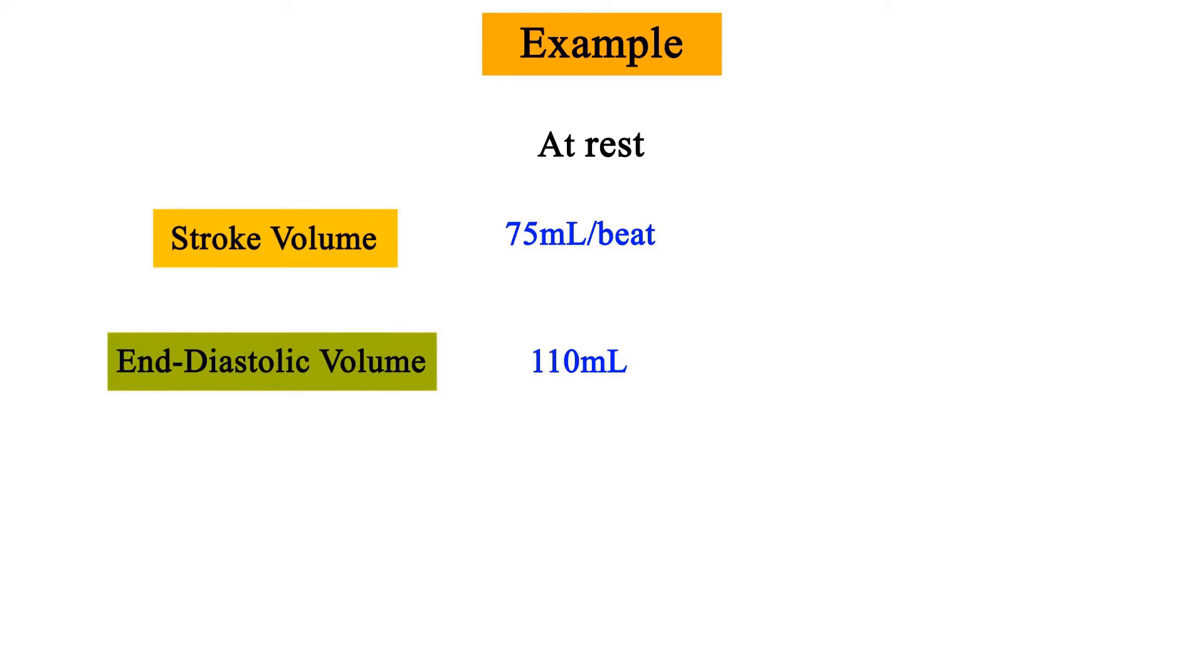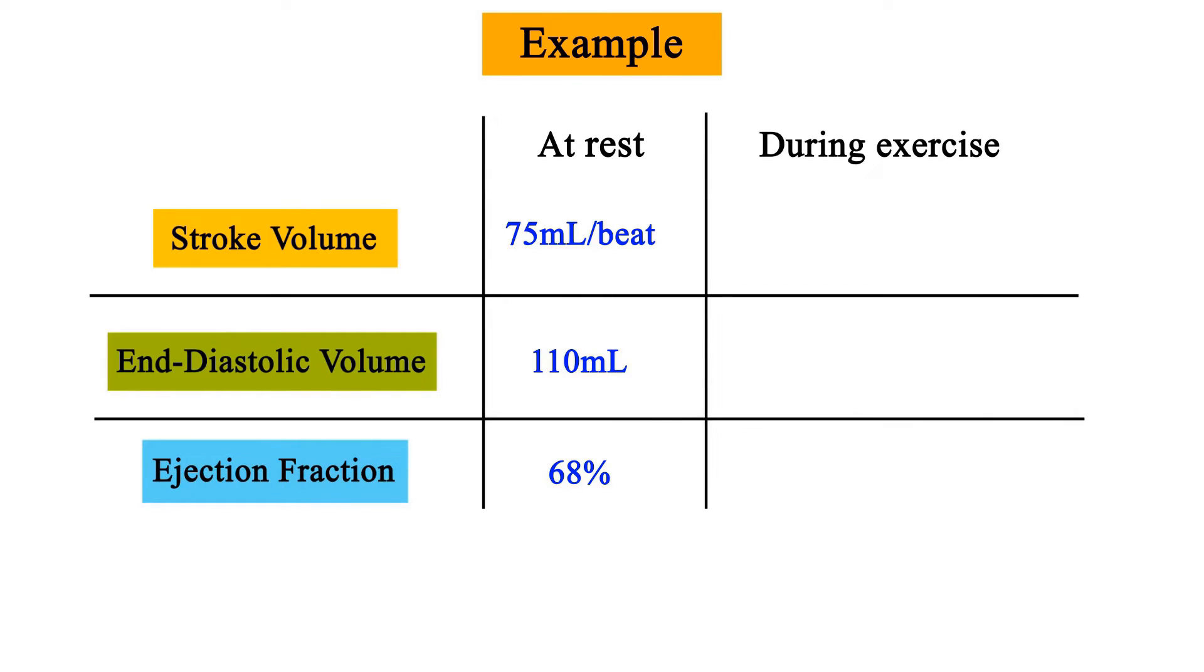For example, a person at rest has a stroke volume of 75 milliliters per beat and an end diastolic volume of 110 milliliters. This results in an ejection fraction of 68%. However, during exercise, as the heart is being stretched by increases in venous return, end diastolic volume increases to 130 milliliters and stroke volume increases to 100 milliliters. This results in an ejection fraction of 77%, a 9% increase in ejection fraction from rest.